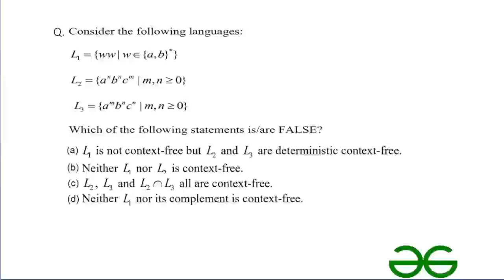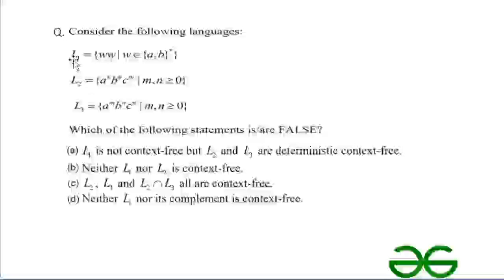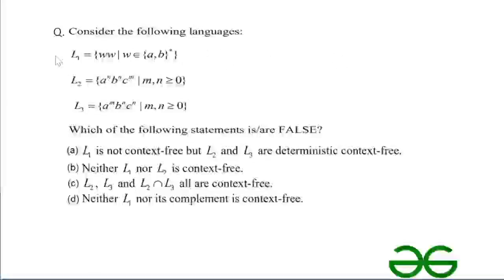Language L1 = ww where w belongs to {a,b}*. Language L1 is a very famous example of a non-context-free language because we cannot construct a pushdown automaton to accept it. Let's see why.